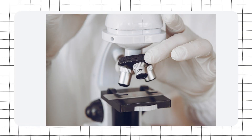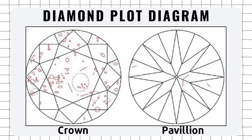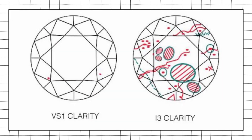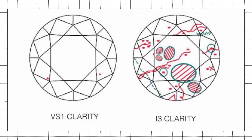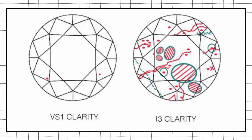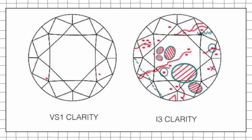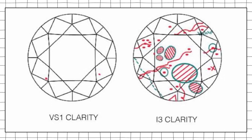But apart from that, we also need to grade all of these plots — all of these inclusions and blemishes — inside a diagram. That is basically how we derive a clarity grade. So today, we're going to be seeing how we plot these and what kind of colors and markers we use for that. Let's get right into the video.